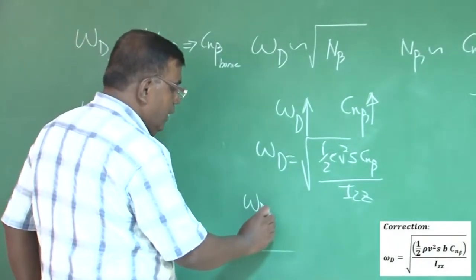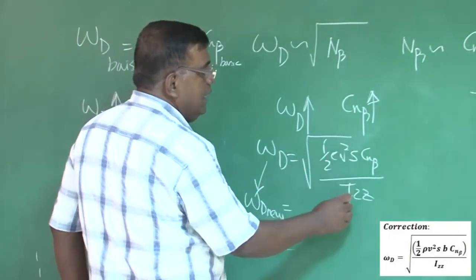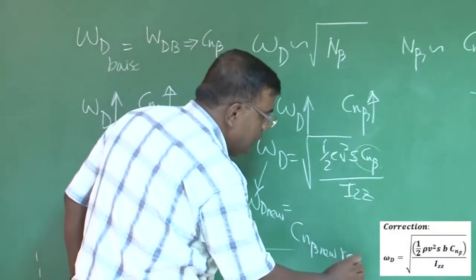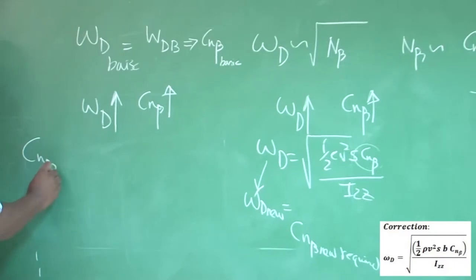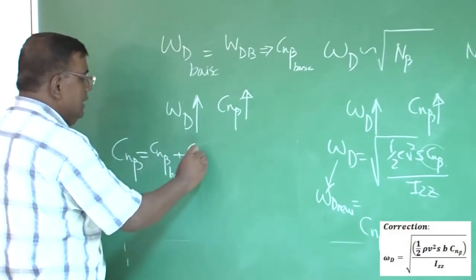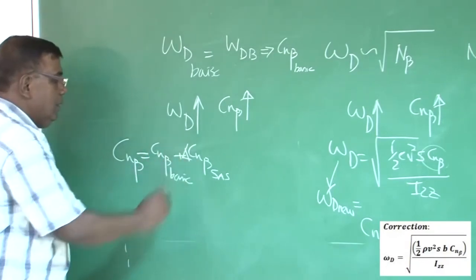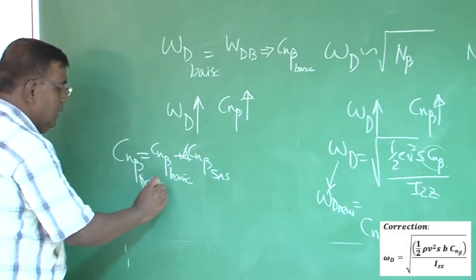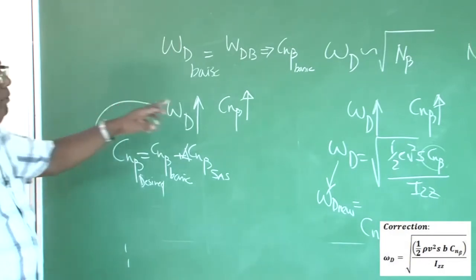omega d equal to under root of half rho v square s c n beta by Izz. So, all these values I know from here, whatever dutch roll nu is required, that I put on the left hand side and for a rho v and s and Izz, I know what is the c n beta nu required total.